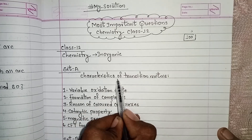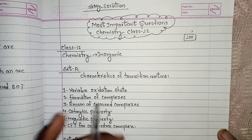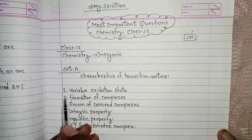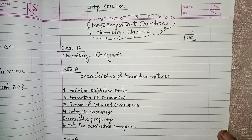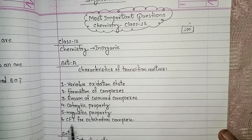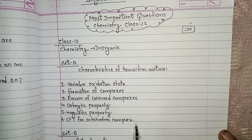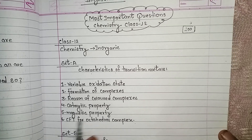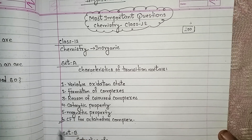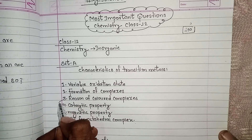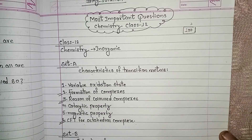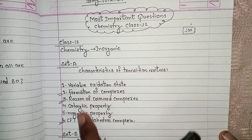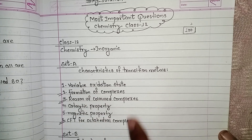Characteristics of transition metals — points 1, 2, 3, 4, 5, 6 — is very important. CFT of the octahedral complex is very important. Region of color complex is very important. Formation of complex is very important. Points 2, 3, 6 are very important.